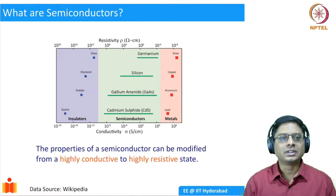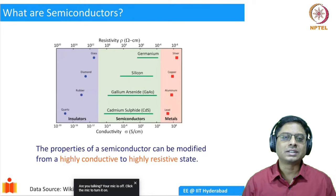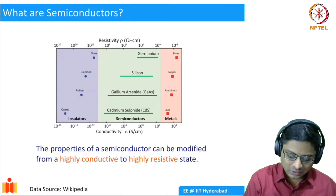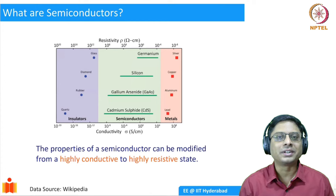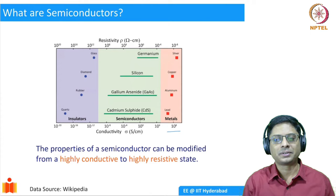The first question we ask ourselves is: what are semiconductors? All of us are familiar with metals in our daily life — metals like copper, lead, gold, silver, etc. If you apply a potential across these metals and measure the current, you will see that the metals carry a lot of current; they conduct a lot of current. The current carrying capability of metals is given by a quantity known as conductivity, whose units are Siemens per centimeter. In this graph here, I have shown a few metals and their corresponding conductivities. You see that most of the metals have conductivities in the range of about 10^8 Siemens per centimeter, which is a reasonably large amount of conductivity.